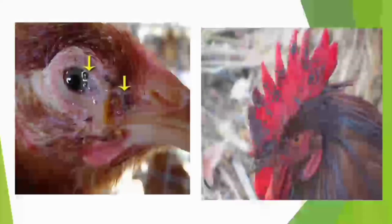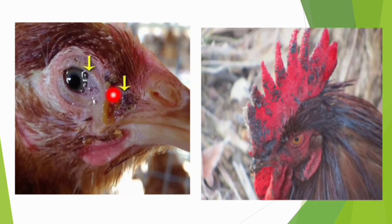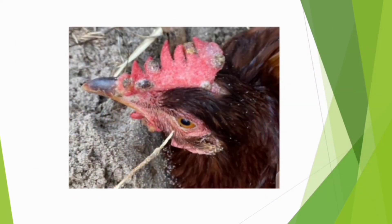This is how chickens with fowlpox look like. You see the ocular discharge. You see the lesions — the black scurvy regions here on the combs and on the wattles. See how fowlpox looks like. When your chickens are having things like these, know that this is fowlpox.